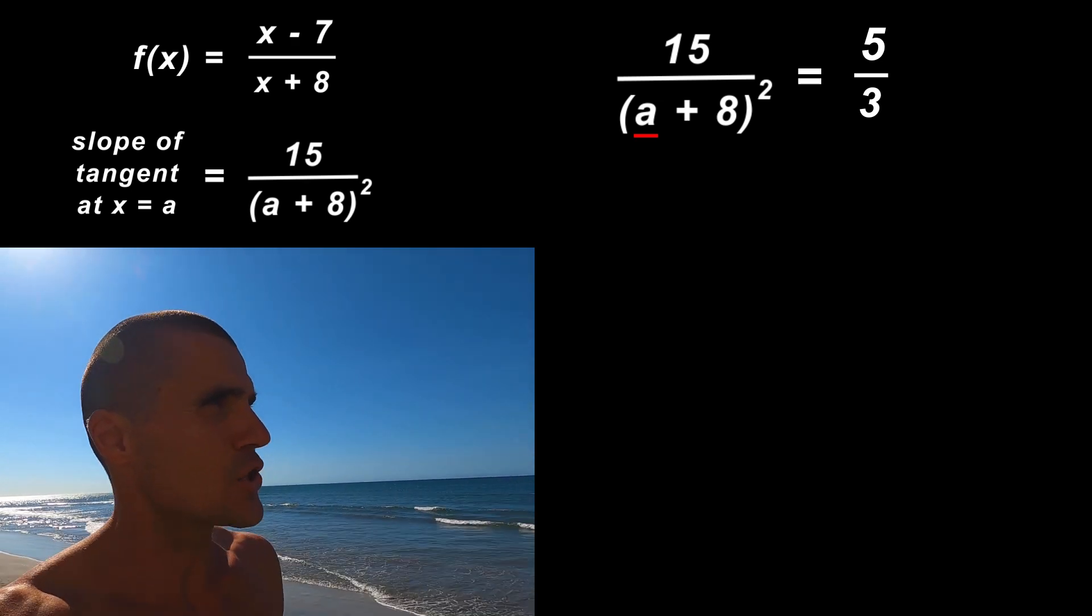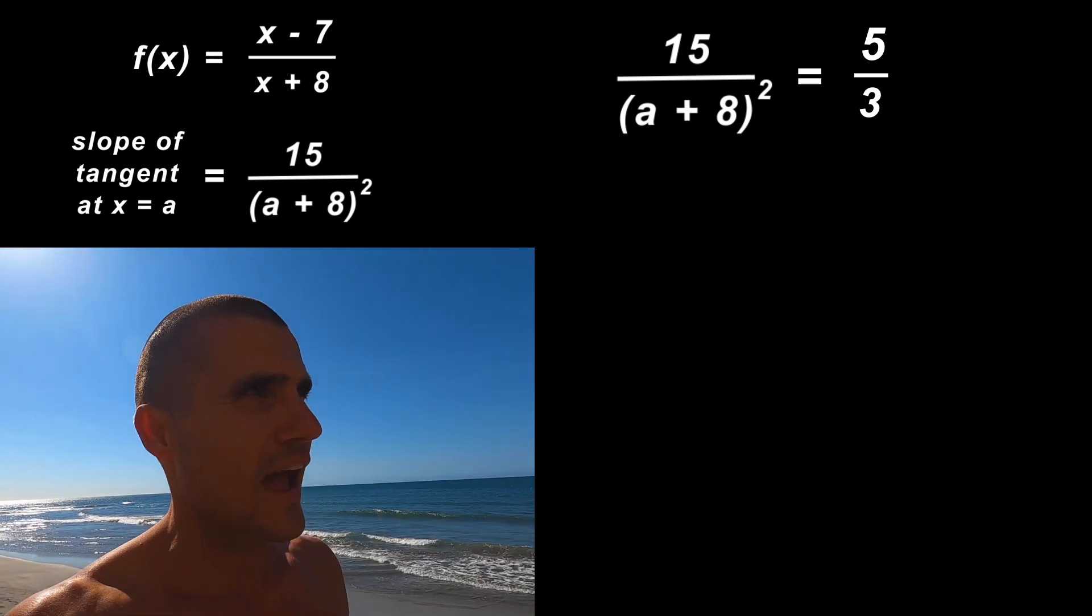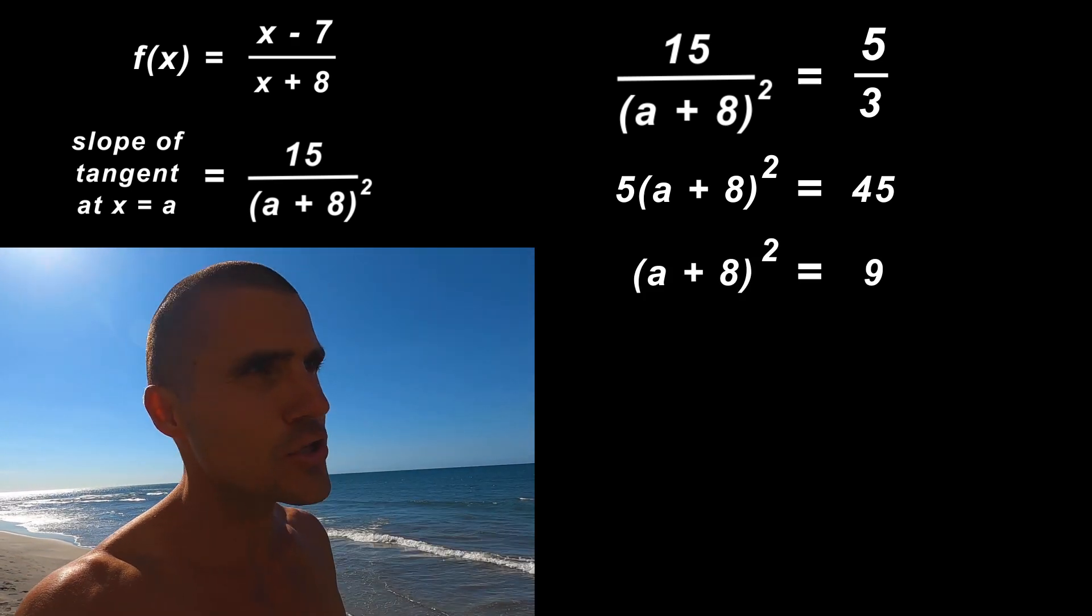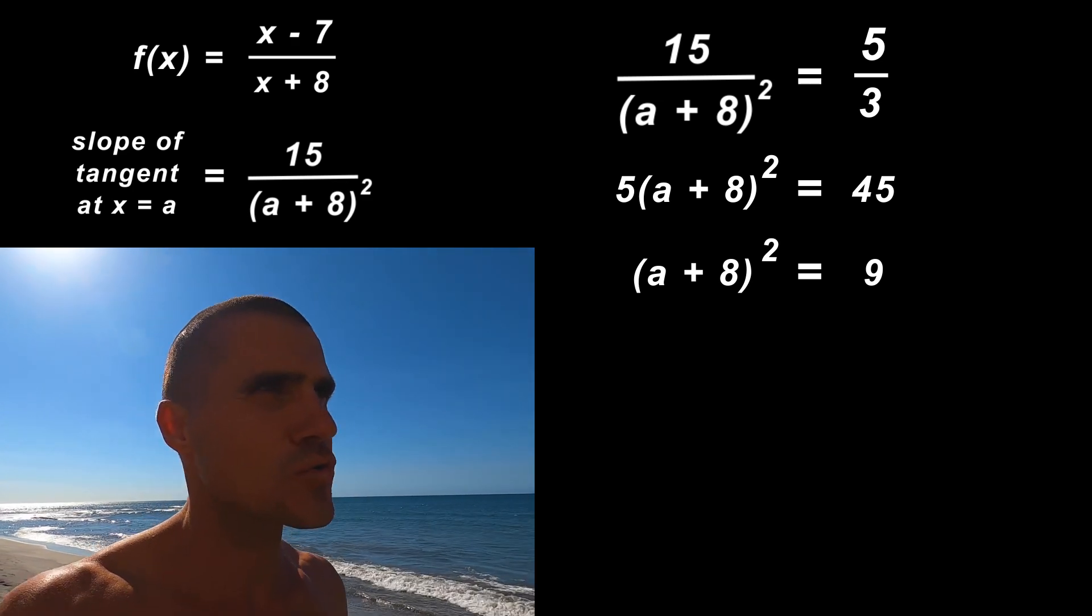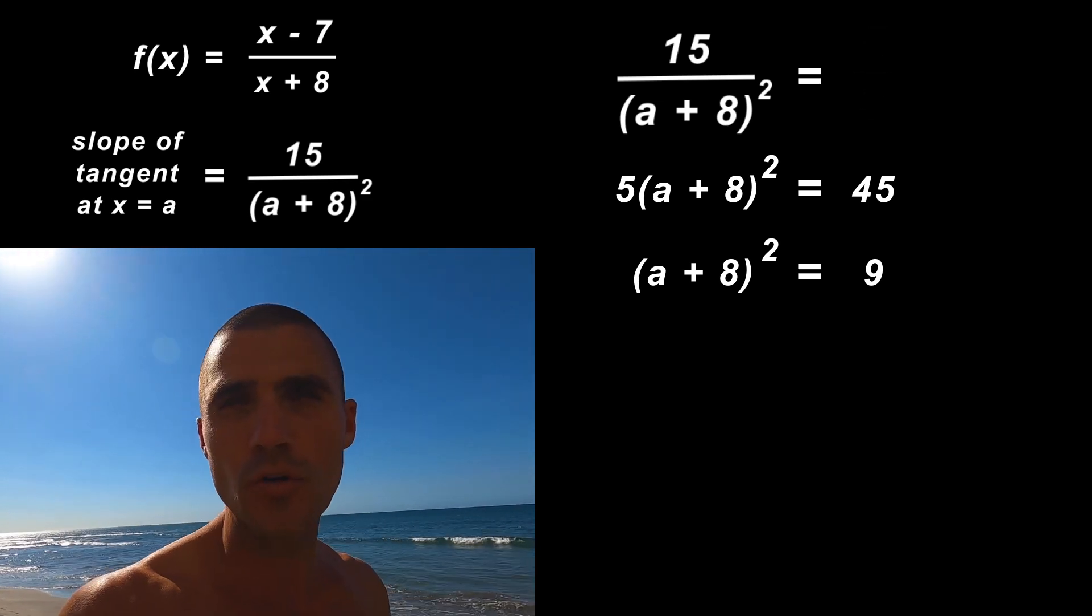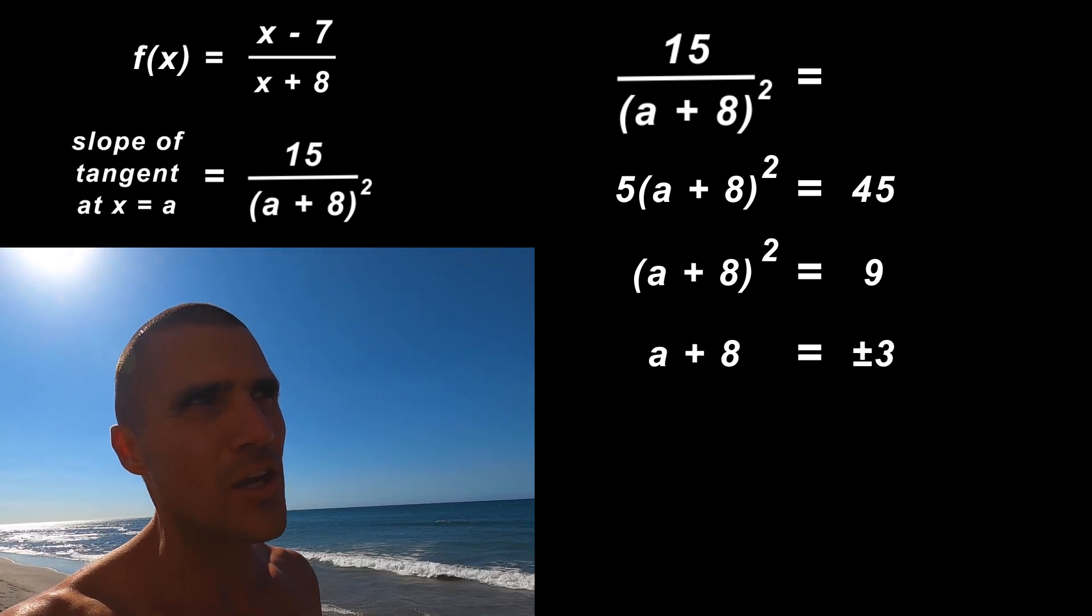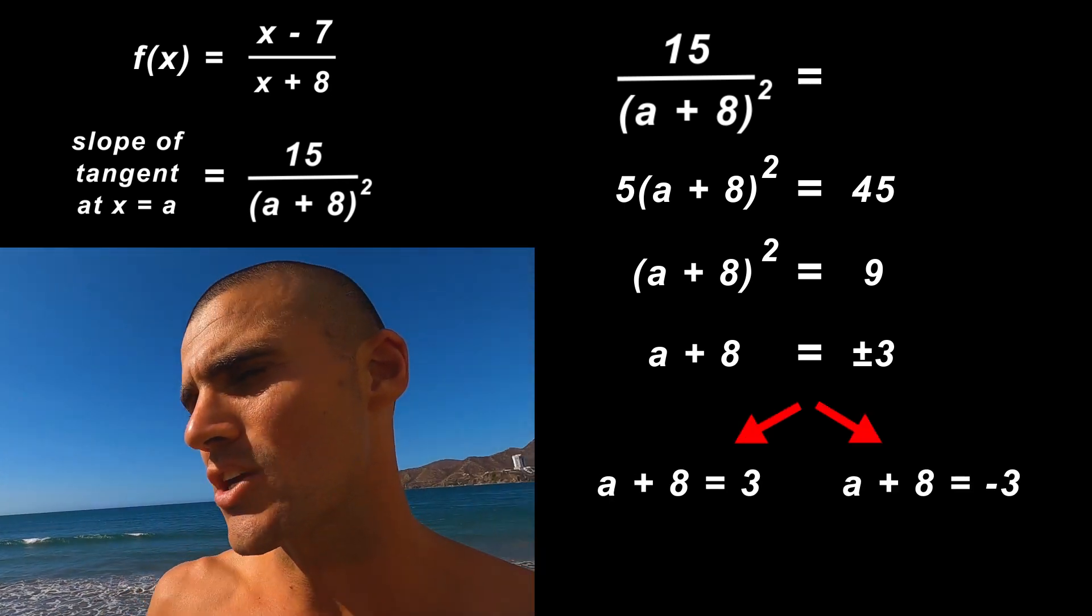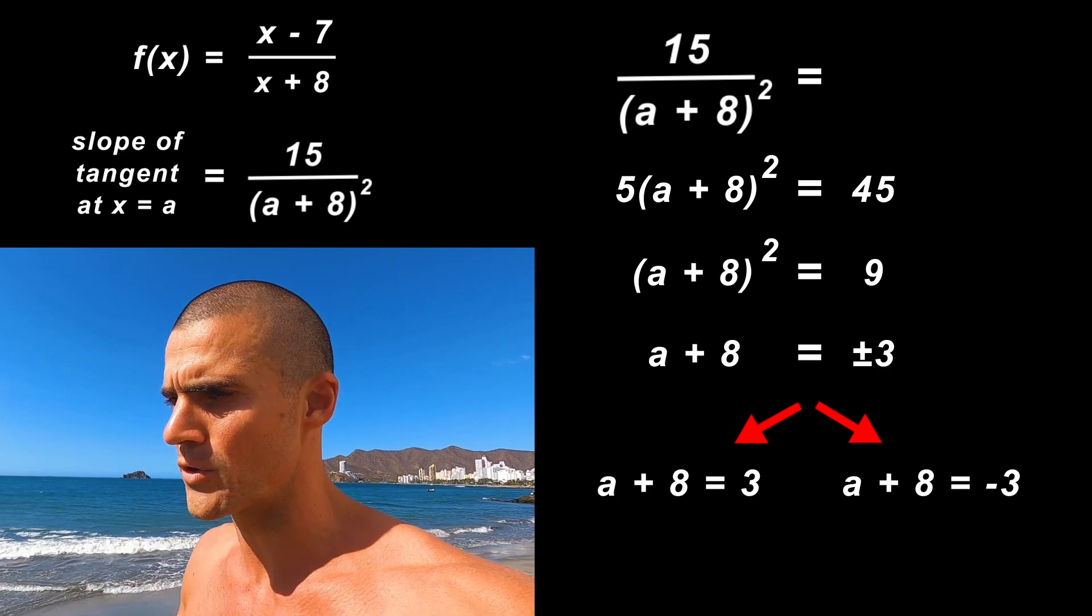Notice that we have two fractions on both sides of the equal sign, so we could cross multiply at this point. You're going to get to a point where you have (a+8)² = 9. To get rid of that exponent we could square root both sides, but when you square root 9, you got to remember the square root of a positive number is going to be plus or minus. There's going to be a positive and a negative 3.